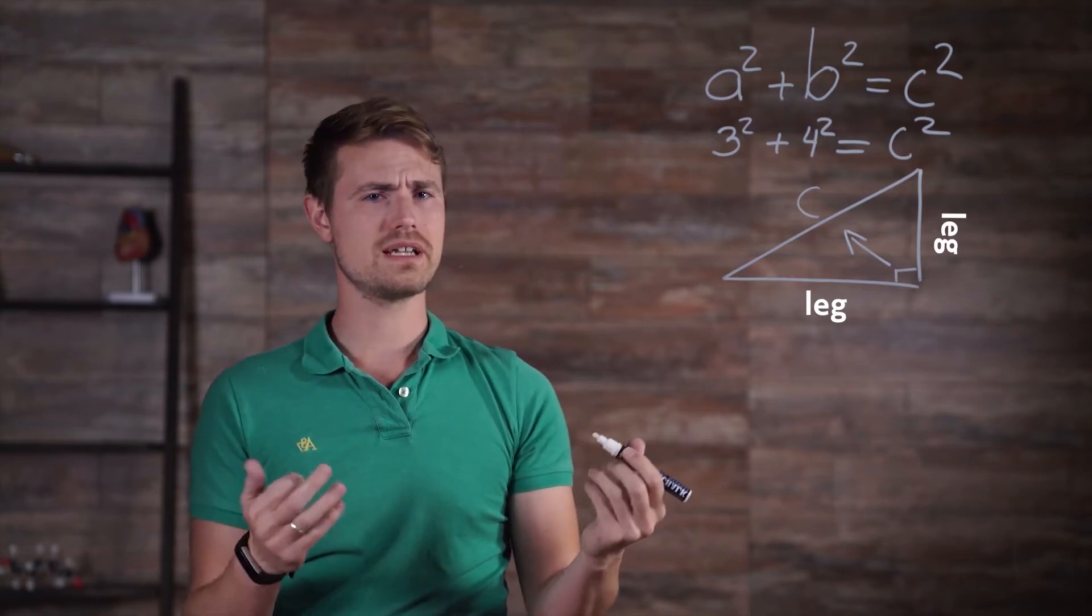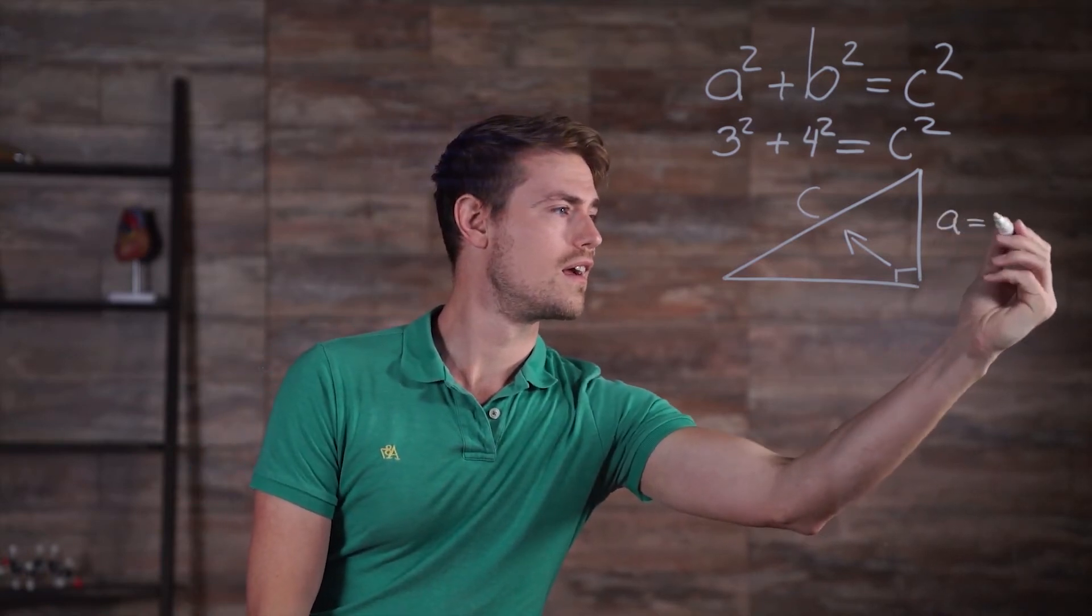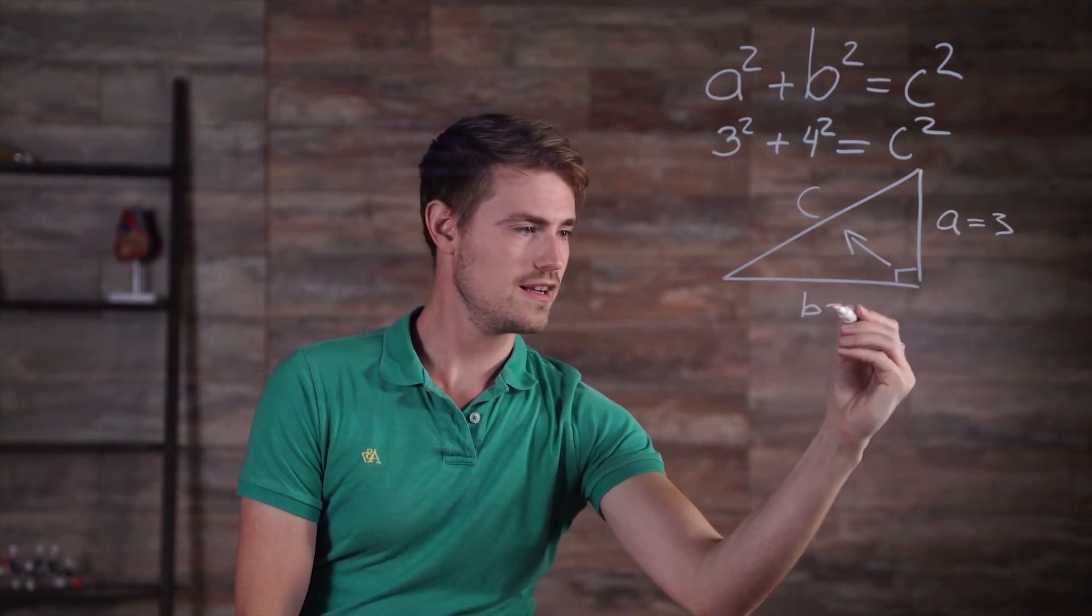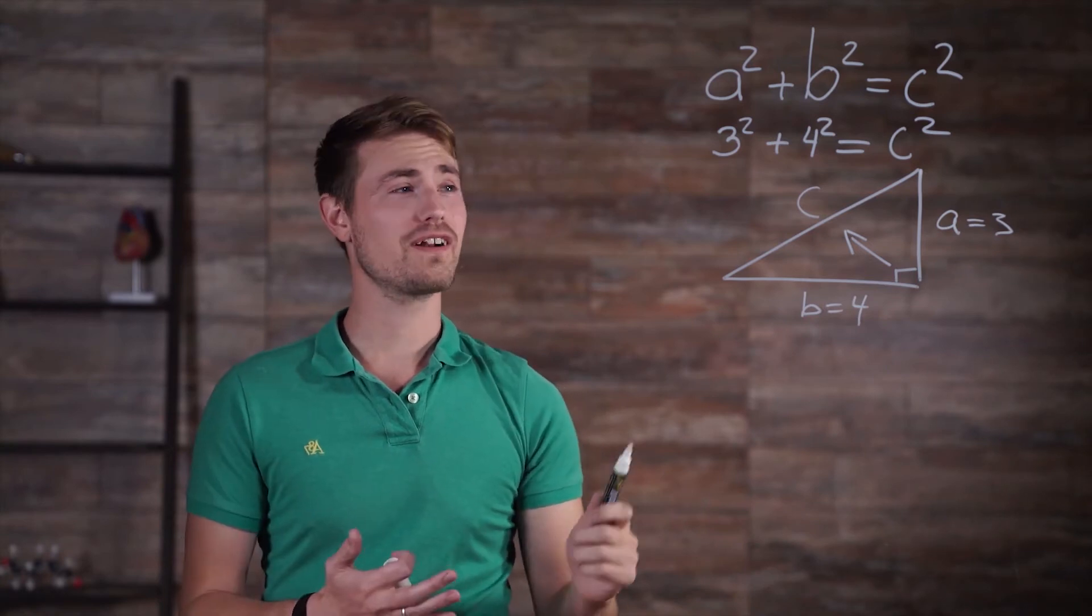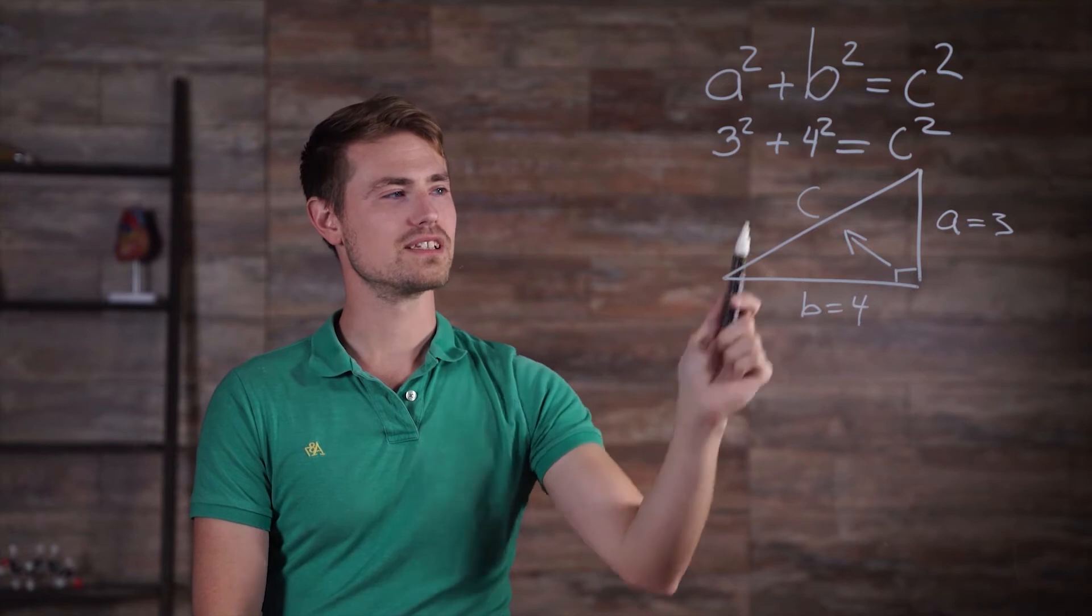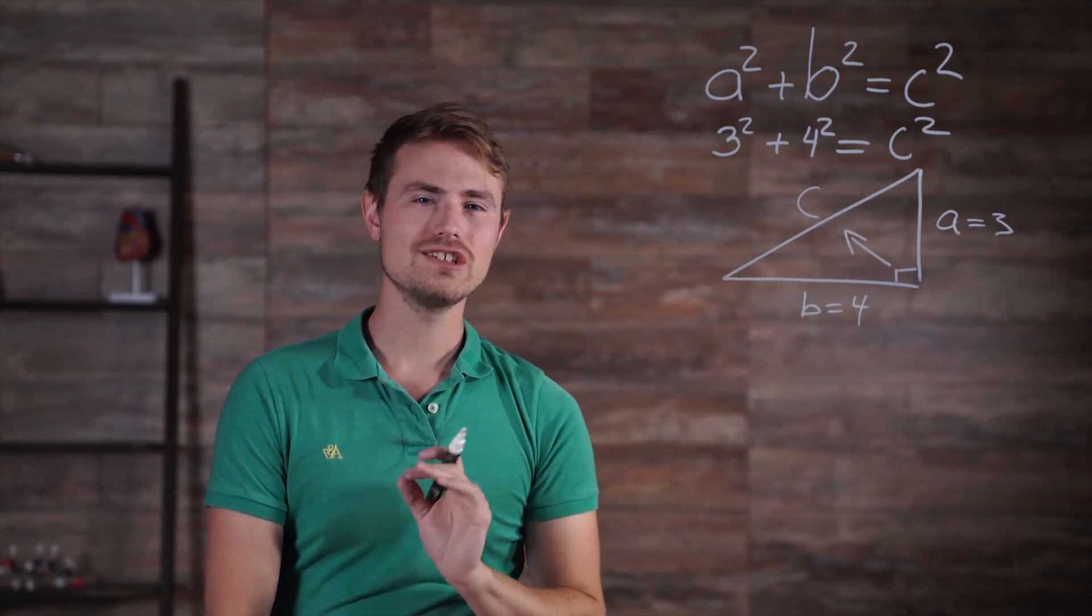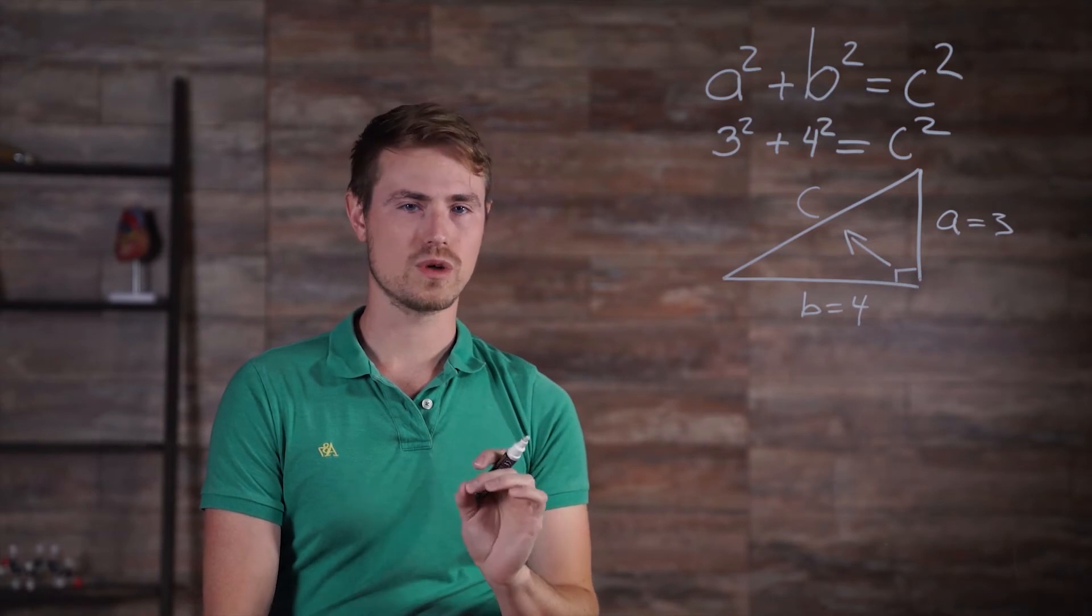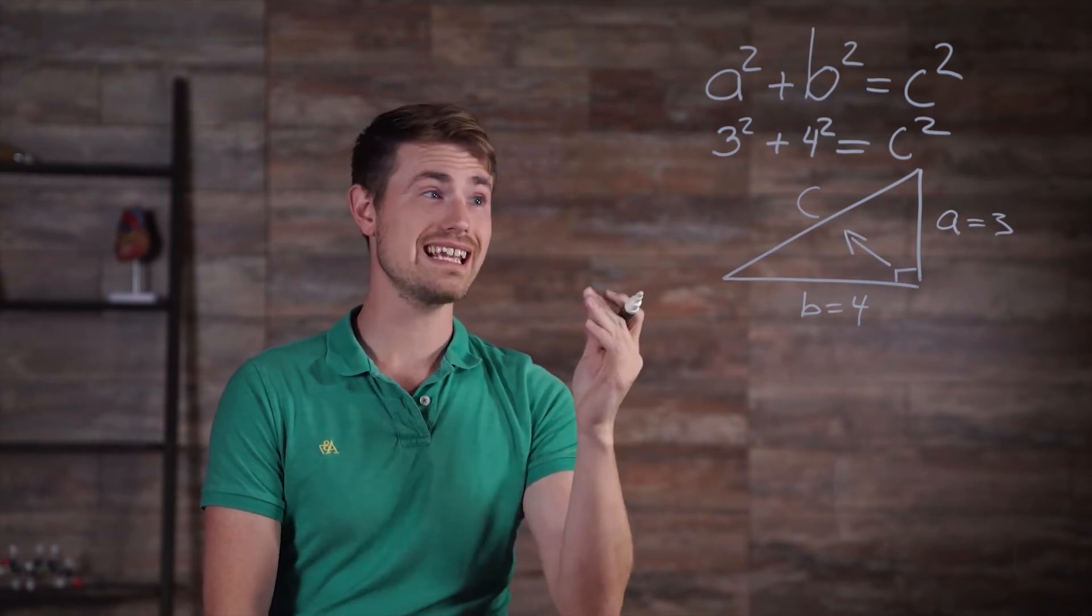Let's pick three centimeters for a, and our b will be down here, and we know that's four centimeters. So, this is what our theorem looks like when we have it filled in. Three squared plus four squared is equal to c squared. Now we can just evaluate three squared and four squared, which means multiplying three times three and four times four.